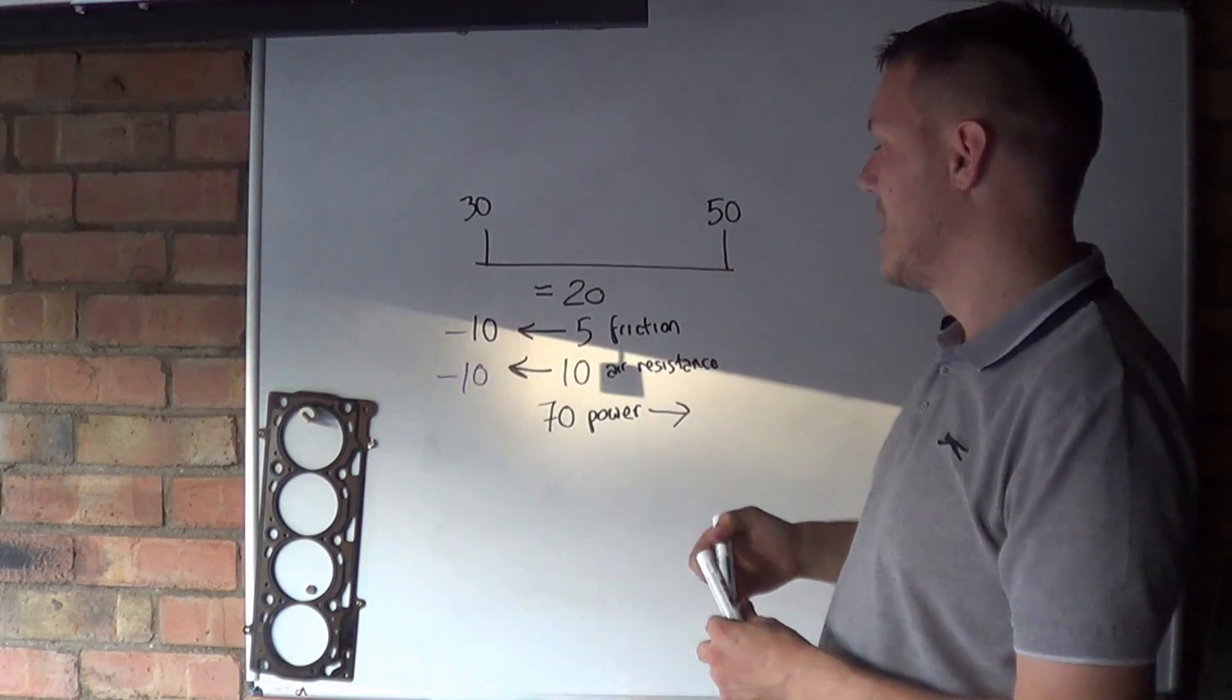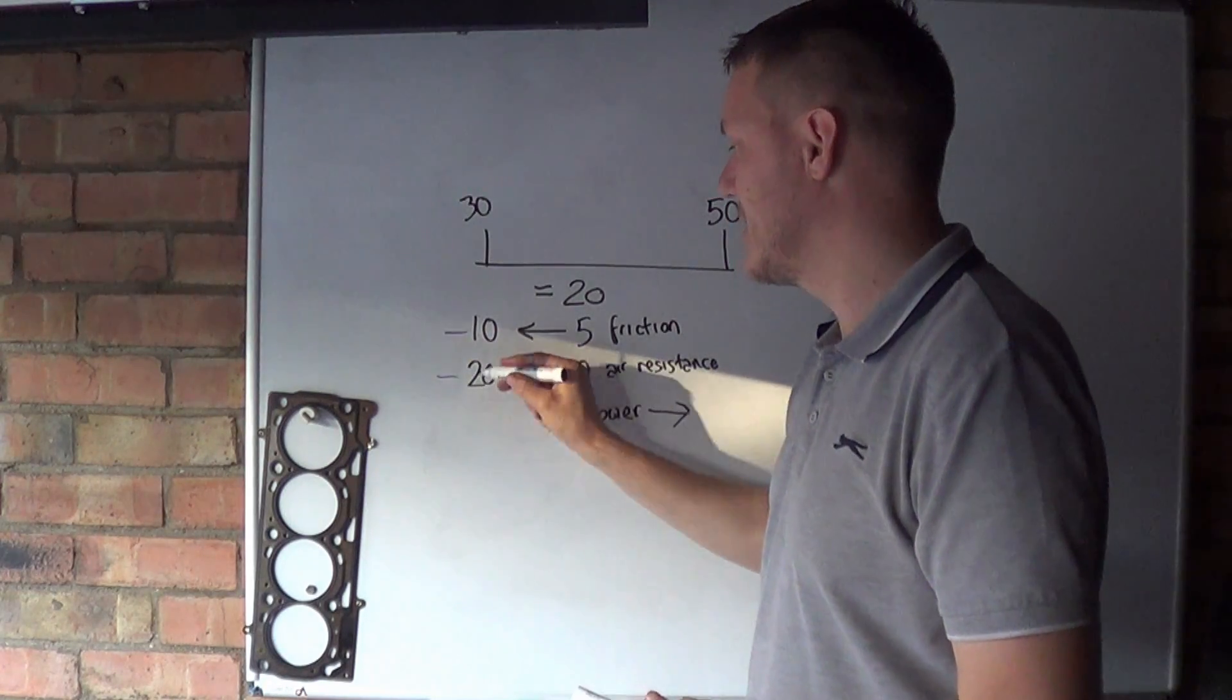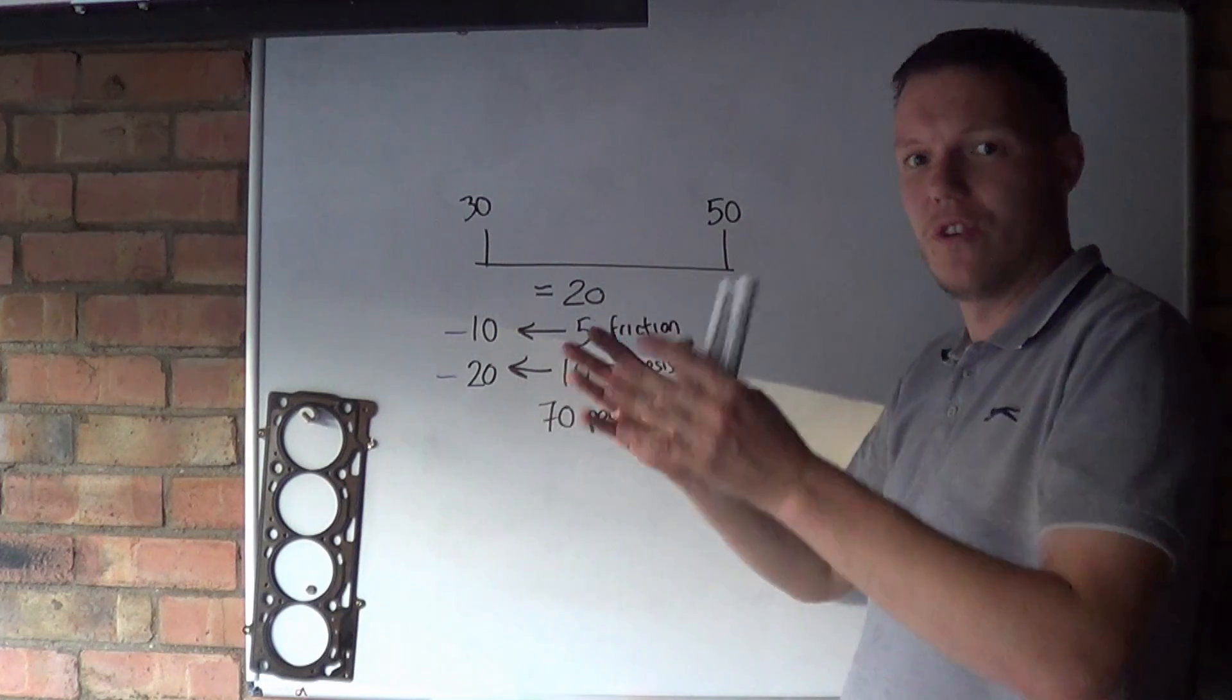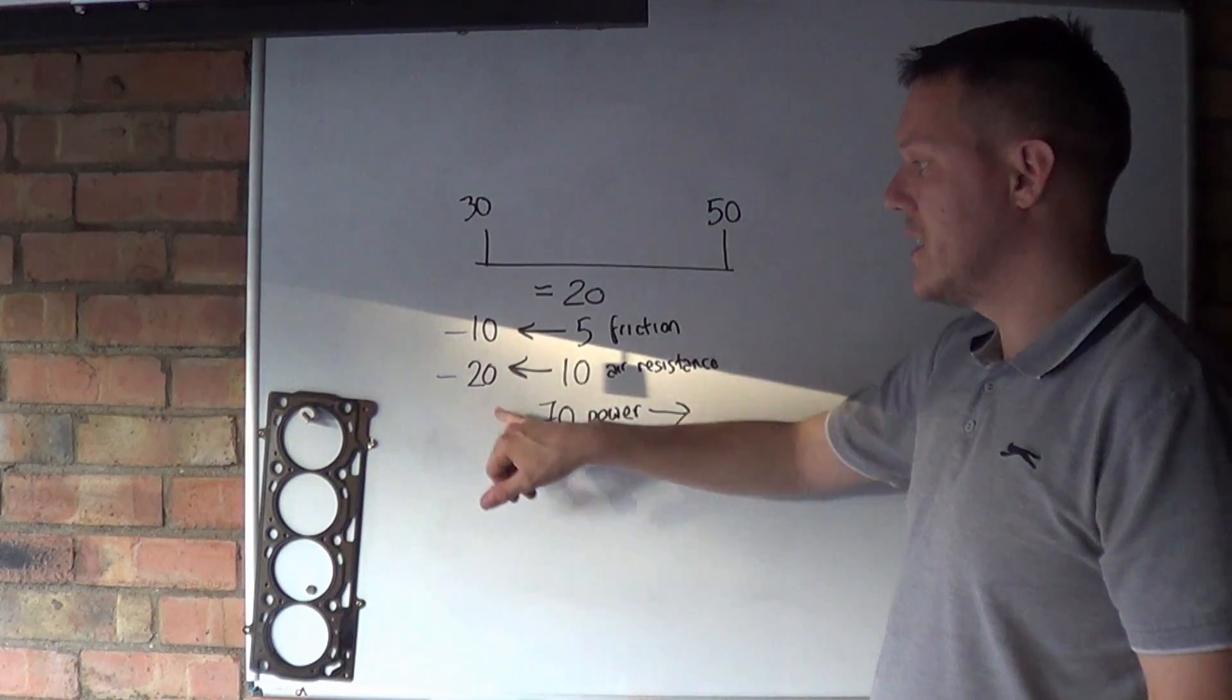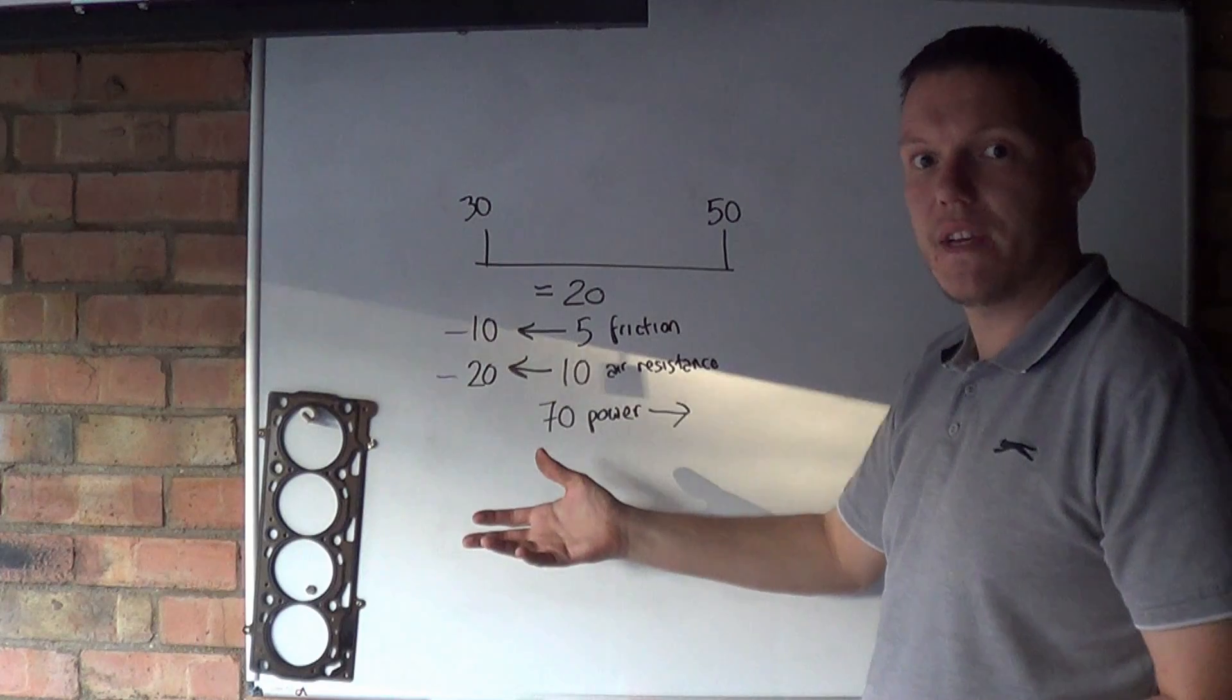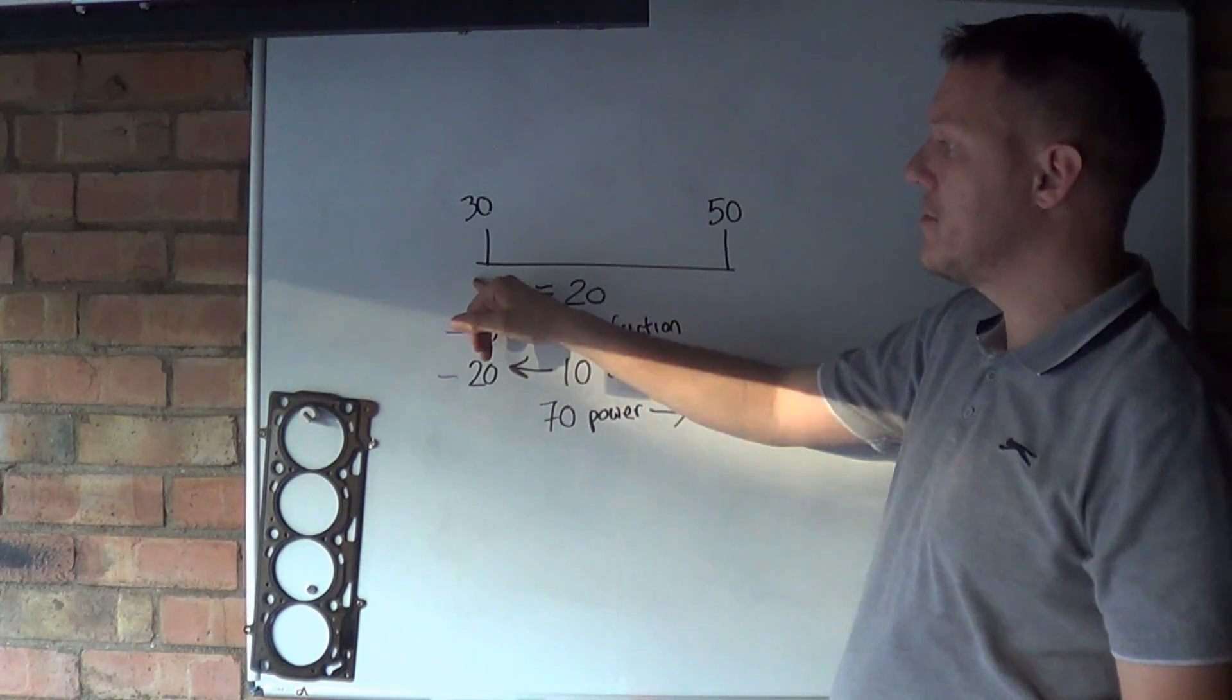Because air resistance is 20, that doubled, we've got to double that again. Like I say, these numbers are just arbitrary, it's just to get into your head. But all of a sudden you can see that we've got 70 and we're minus 30 now where before we were minus 15, so we've doubled the amount of resistance.